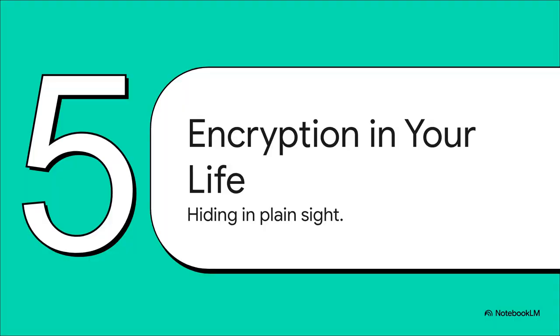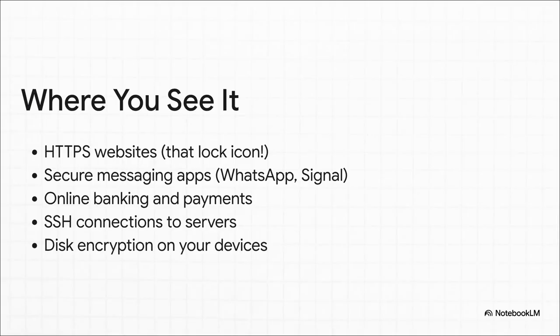And this powerful hybrid system isn't some obscure, nerdy technology — it is everywhere, protecting you every single day, hiding right there in plain sight. That little lock icon on HTTPS websites? That's hybrid encryption. Those end-to-end encrypted messaging apps like WhatsApp and Signal? That's it too. Every single time you do your online banking, make a payment, or connect to a server, this beautiful complex dance of mathematics is happening in the background, keeping you safe.